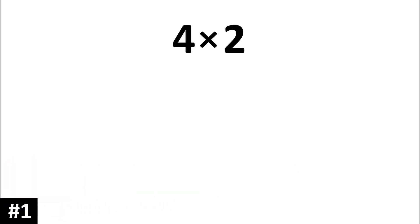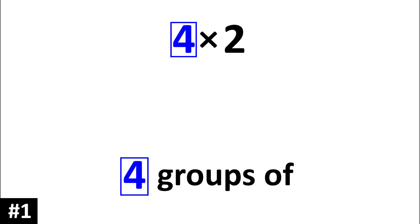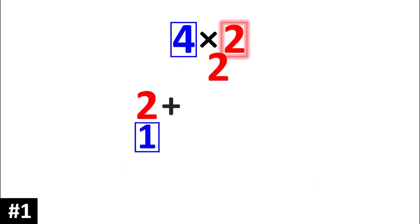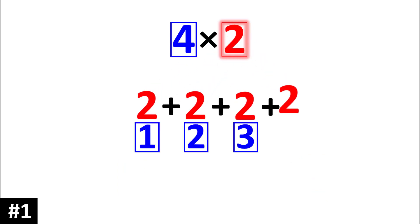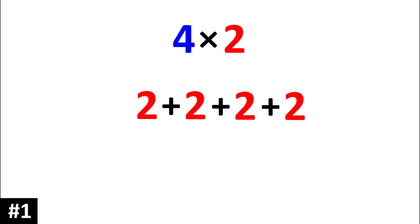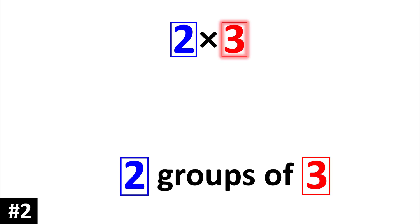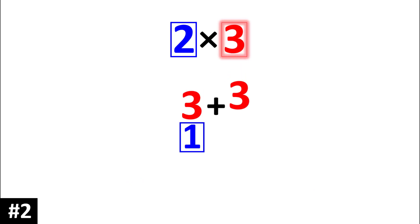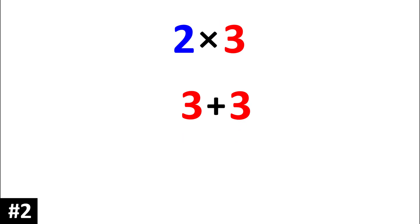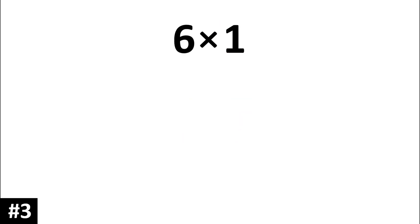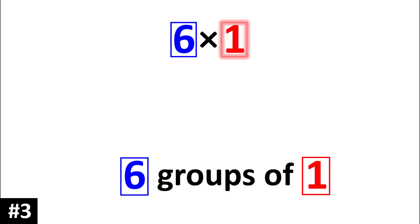Four times two is the same thing as four groups of two. Two times three is the same thing as two groups of three. Six times one is the same thing as six groups of one.